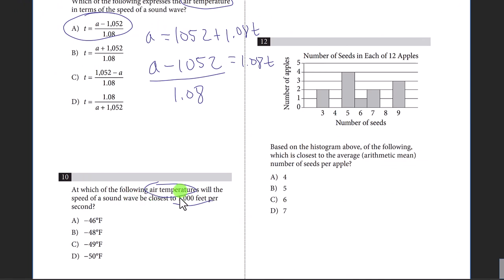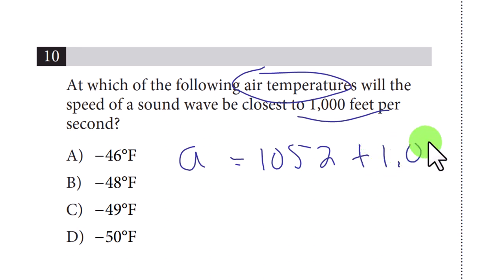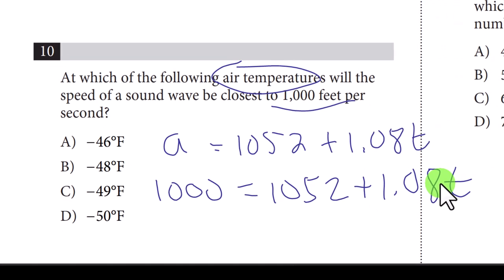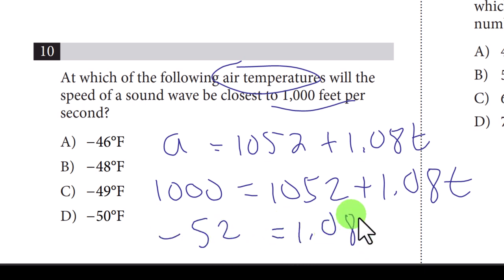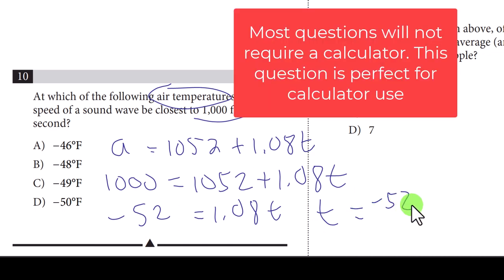Question ten: find the air temperature when speed is 1000 feet per second. Plug in: 1000 equals 1052 plus 1.08t, so negative 52 equals 1.08t. Use your calculator: t equals negative 52 divided by 1.08, which gives approximately negative 48. The answer is B.